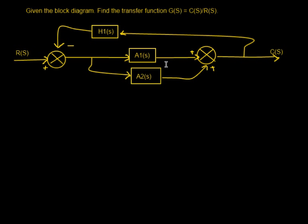The first thing you want to look at is A1(S) and A2(S), and they're in what is called parallel form. You can actually rewrite these into a single block, and it will become A1(S) plus A2(S).